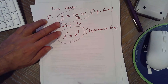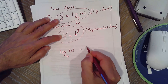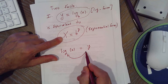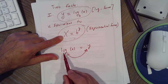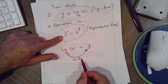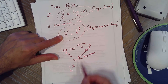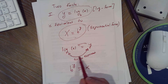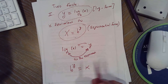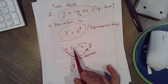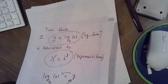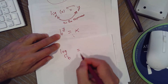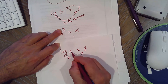To switch from log form to exponential: start at the bottom of the letter g, which is the base, go across the equal sign, and remember y is an exponent — so it's b to the exponent y equals x. Drop the log because now we're in exponential form. To go the other way — from exponential to log — write log, put b at the base, and the exponent y goes across the equal sign to give log base b of x equals y.